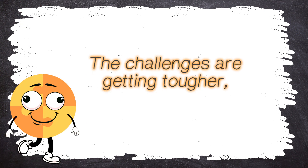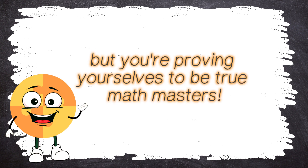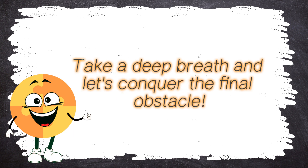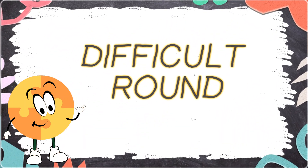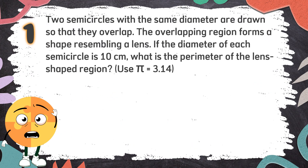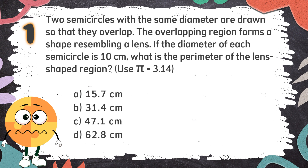Wow, you guys are unstoppable! The challenges are getting tougher, but you're proving yourselves to be true math masters. Are you ready to face the unknown? Take a deep breath and let's conquer the final obstacle. Difficult Round. Number 1: Two semicircles with the same diameter are drawn so that they overlap. The overlapping region forms a shape resembling a lens. If the diameter of each semicircle is 10 centimeters, what is the perimeter of the lens-shaped region? Use pi equals 3.14. The choices are: A. 15.7 centimeters, B. 31.4 centimeters, C. 47.1 centimeters, D. 62.8 centimeters.